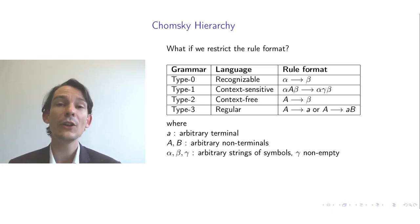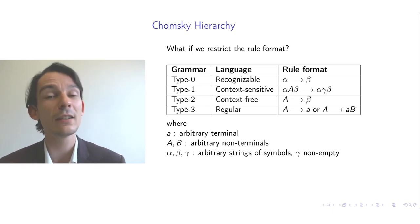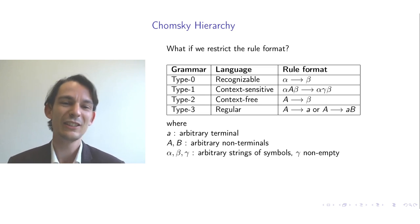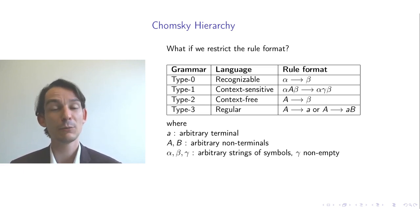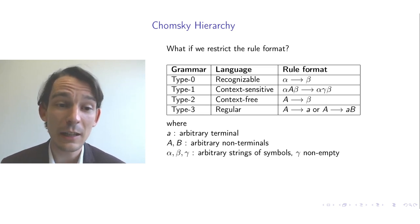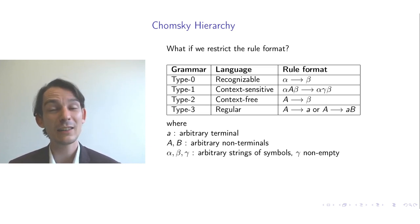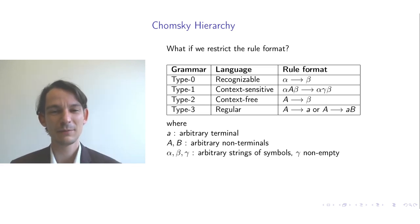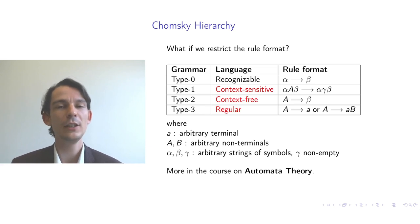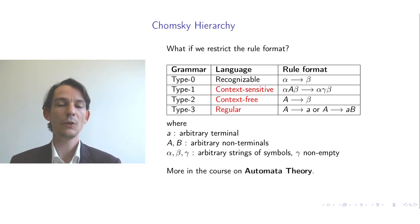Chomsky also defined type 2 and type 3 grammars with even further restrictions. In a type 2 — context-free — grammar, the prefix alpha and suffix beta are always empty, but the right-hand side gamma may be empty, allowing deleting rules. So you have a single non-terminal on the left-hand side and an arbitrary string (possibly empty) on the right. Type 3 grammars, also called regular grammars, always have a single non-terminal on the left-hand side and either a single terminal or a terminal followed by a non-terminal on the right-hand side. In the course on automata theory you can learn more about context-sensitive, context-free, and regular languages; we will make use of context-free languages in the next video.